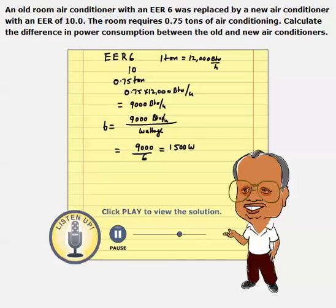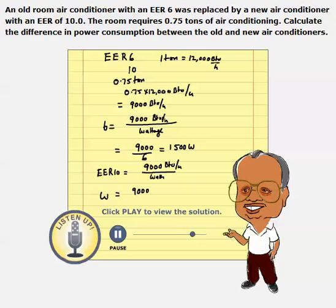Now, if we were to replace this with an EER of 10 air conditioner, it still has to pull out 9,000 BTUs per hour. What would be the wattage? Watts equal to 9,000 BTUs per hour divided by 10. That would be 900 watts. So by replacing this air conditioner, which used to consume 1,500 watts, with an energy-efficient air conditioner with an EER of 10, we are able to bring down the power consumption to 900 watts.